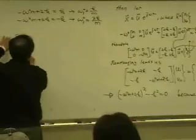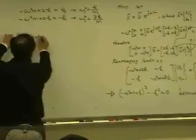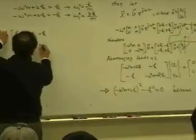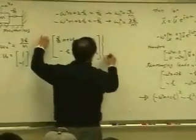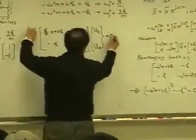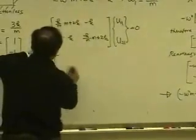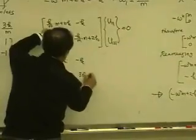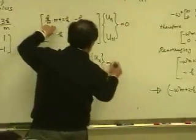The first equation is k over m multiplied by m plus 2k minus k, and minus k, k over m multiplied by m plus 2k, and this is u1,1 and u2,1 equal zero. And this equation is simply 3k minus k, minus k, 3k, u1,1, u2,1, zero, zero.